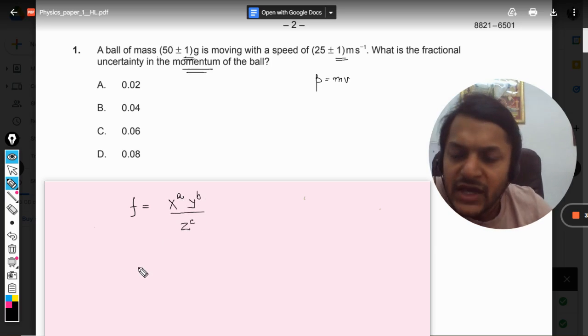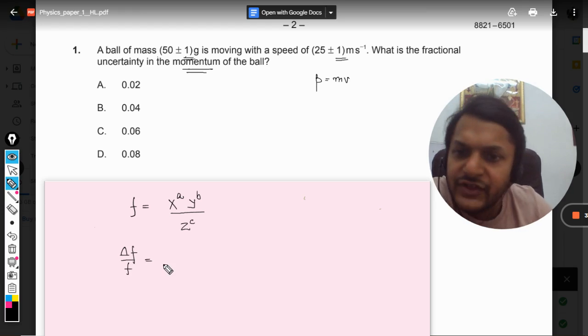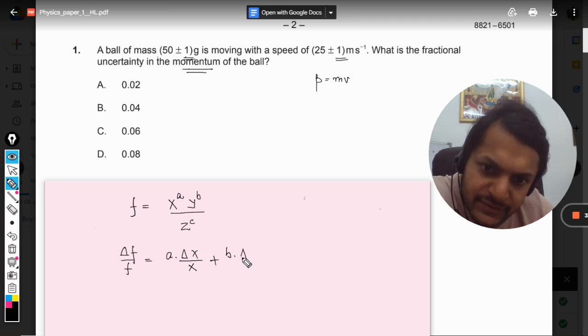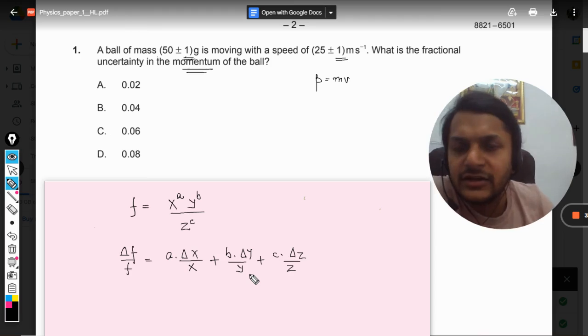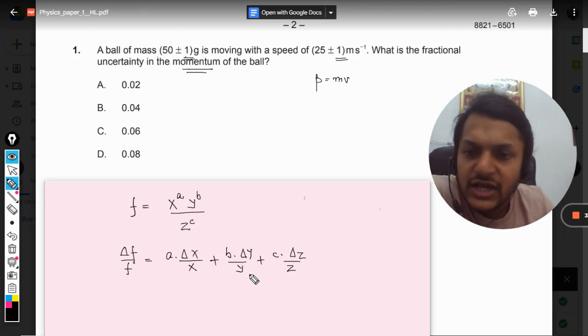In this case, when you want to find the fractional error of the function, what you do is: a times the fractional error in x, plus b times the fractional error in y, and c times the fractional error in z. Yes, you would be adding all the errors whether the physical quantity is part of the numerator or denominator. We don't—that doesn't matter to us. The only thing is that we're going to add all the errors.